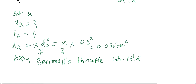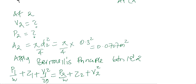Applying Bernoulli's principle between 1 and 2 gives P1 over the specific weight of the fluid plus Z1 plus V1 squared over 2g equal to P2 over w plus Z2 plus V2 squared over 2g.